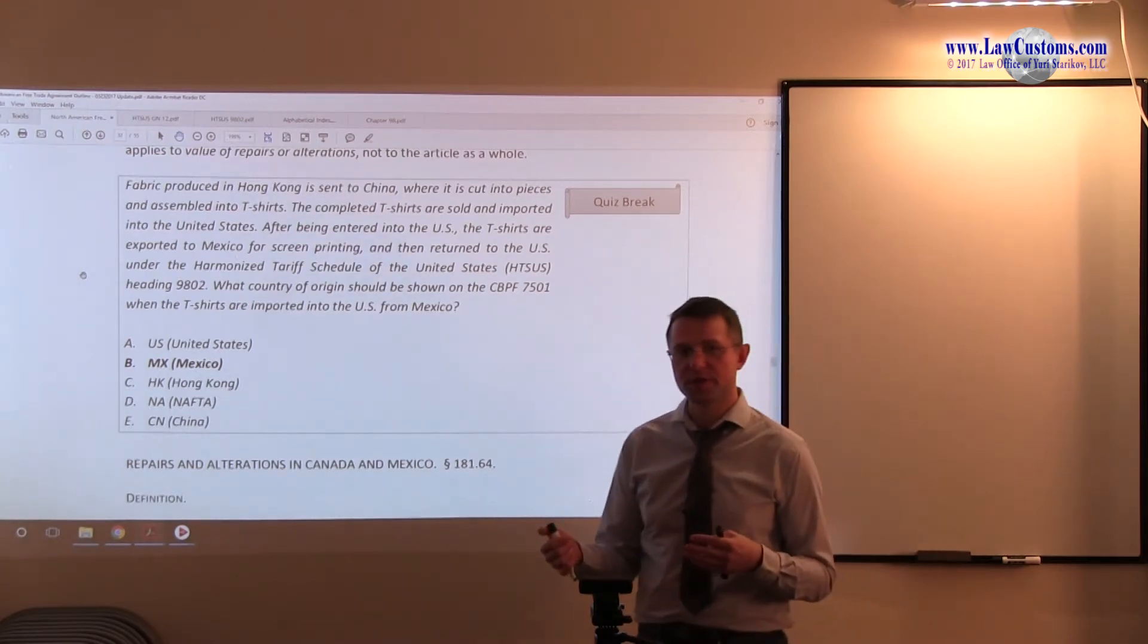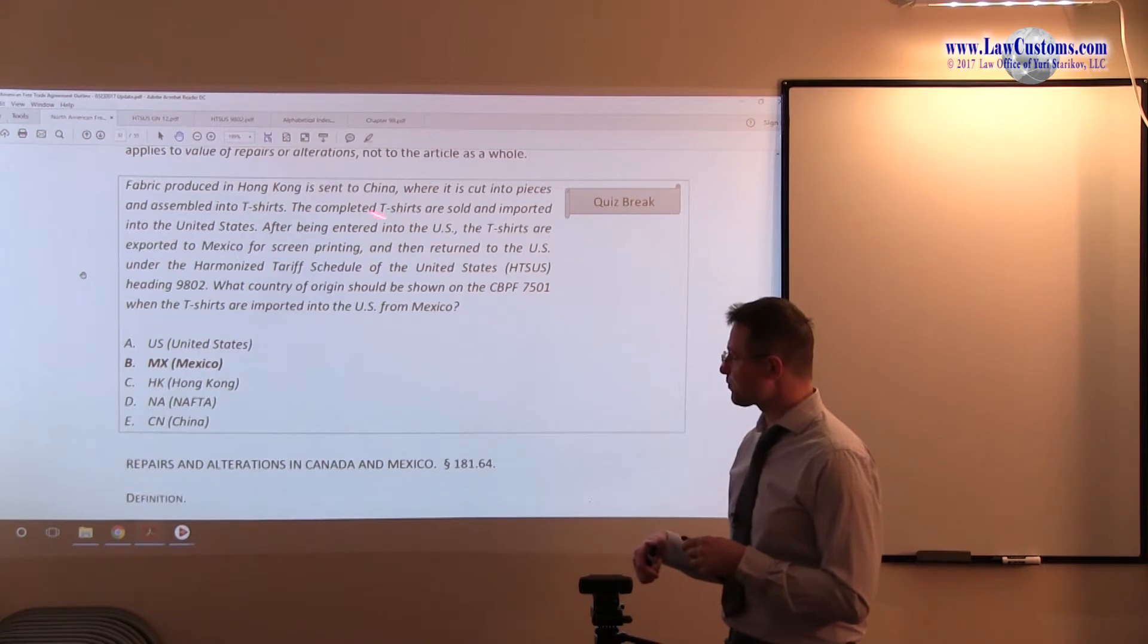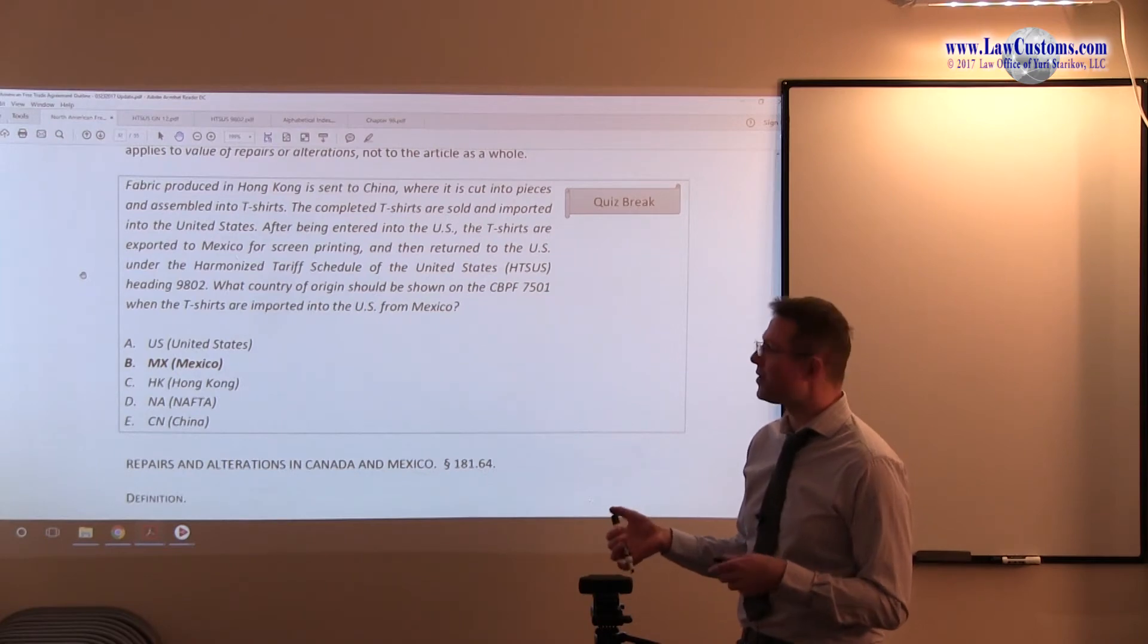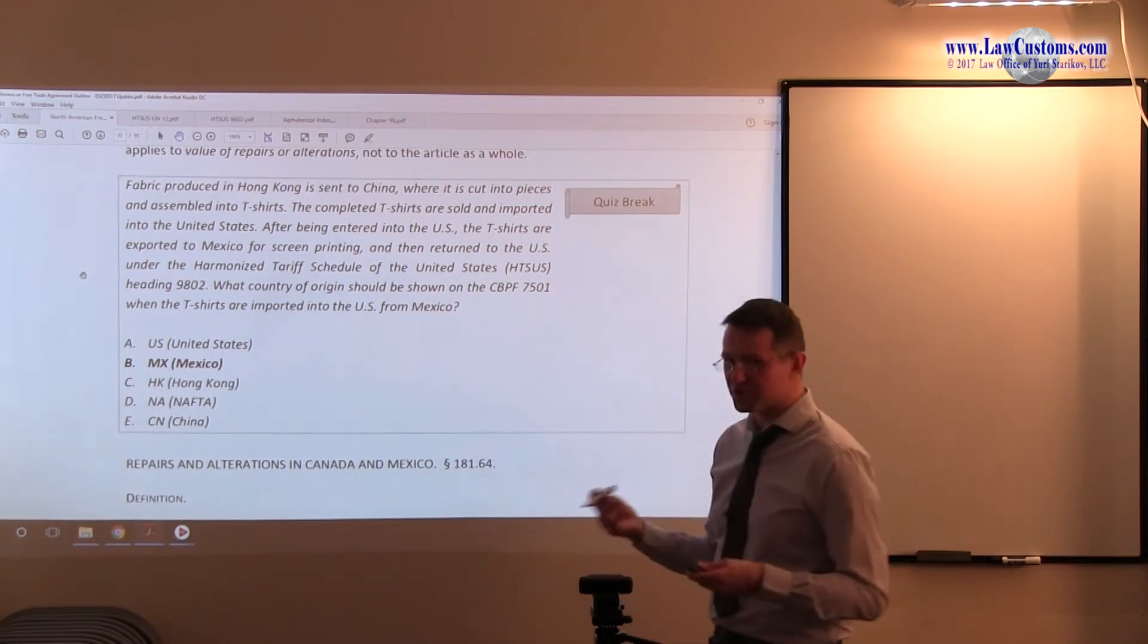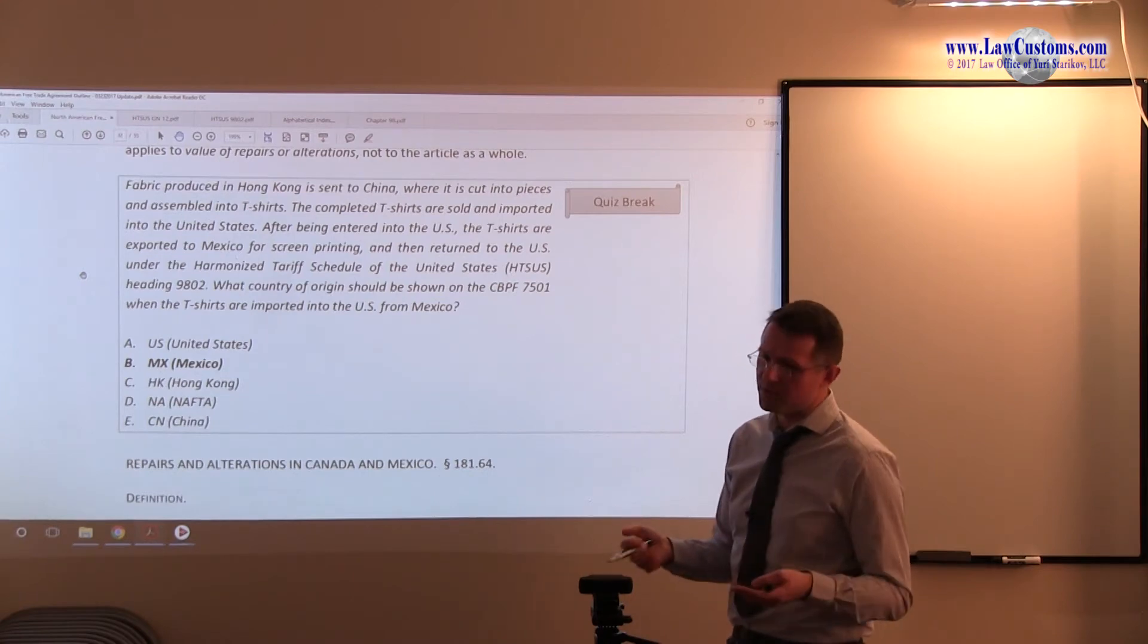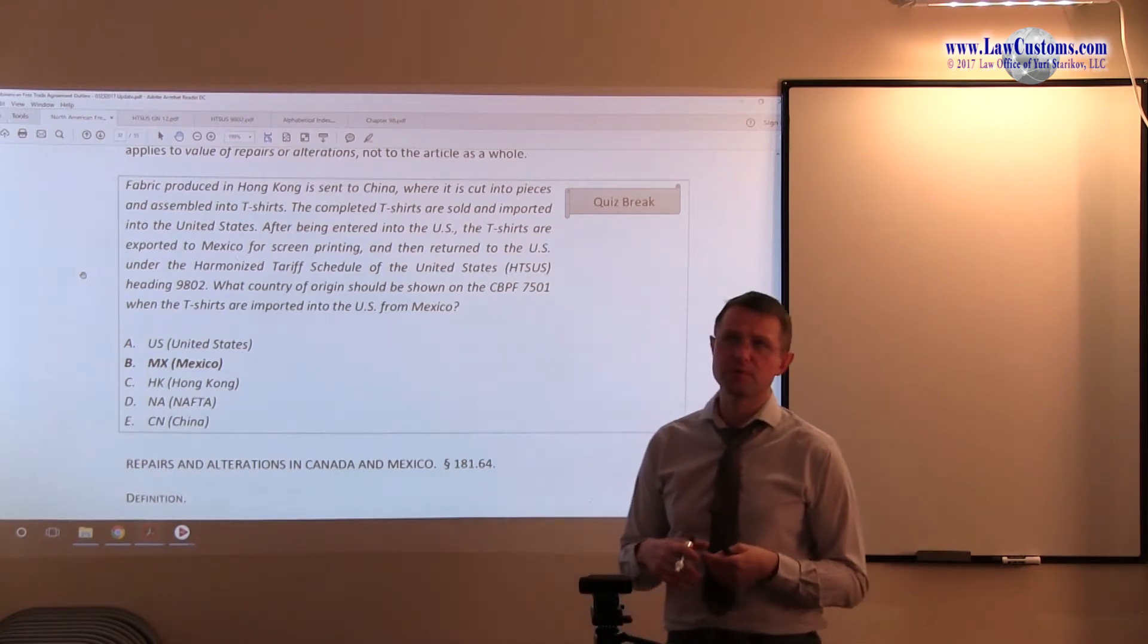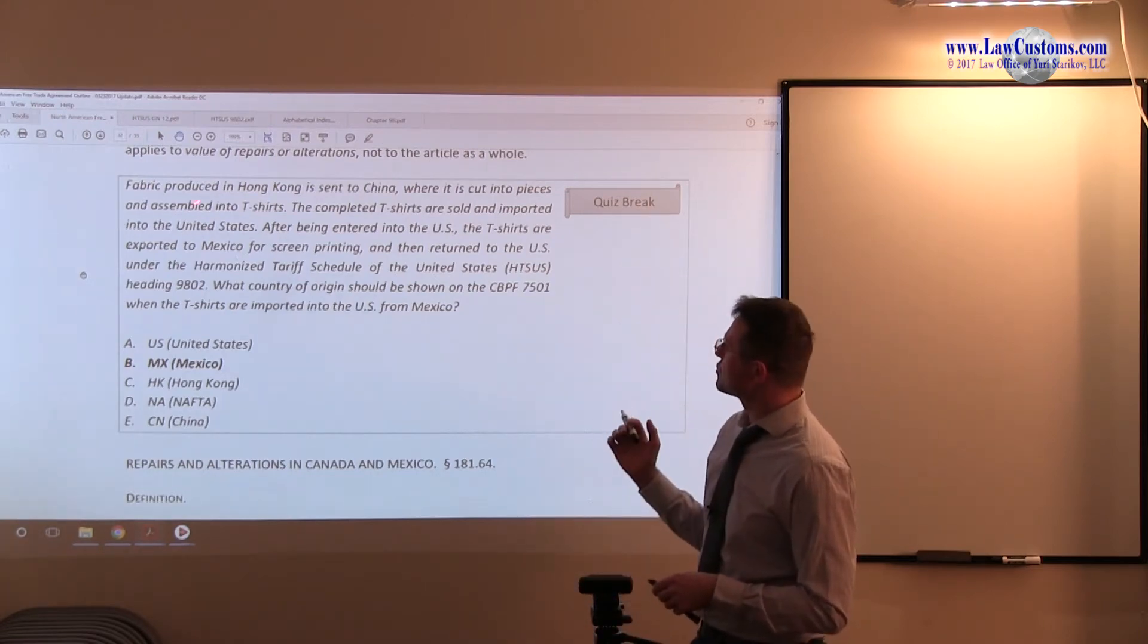Of course, we know that Hong Kong, although it is part of China, it is treated as a separate customs territory. But most likely, because it was only the fabric that was in China and the actual making was in Hong Kong, it is likely the country of origin is to be Hong Kong. Without engaging in the tariff shifting or details like that, this is just a rule of thumb. Because this is where most essential operation took place. Of course, for textiles, we have to engage in tariff shifting methodology under section 102.21 of the Code of Federal Regulations. But this is just a shortcut.